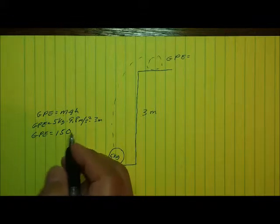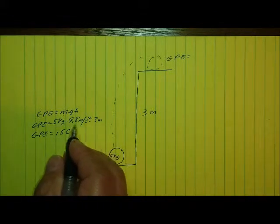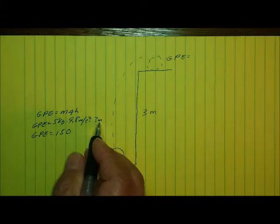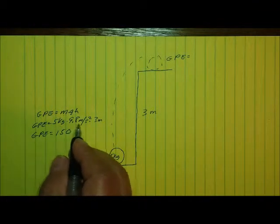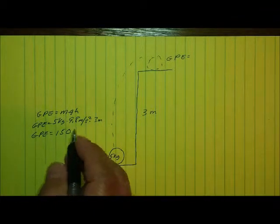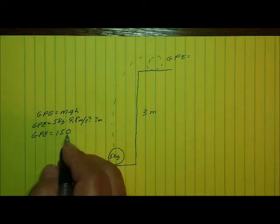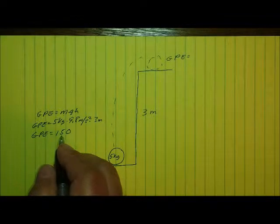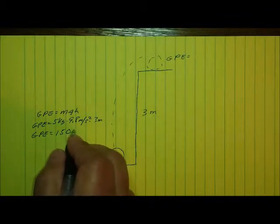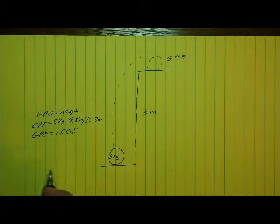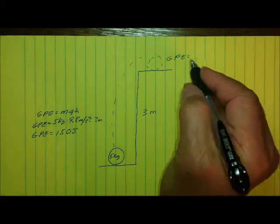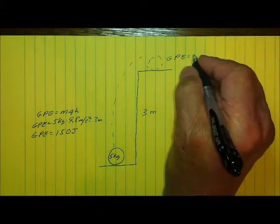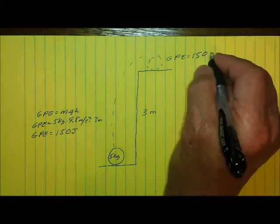And that's going to be kilogram meters per second squared, which is newtons, times meters. So, it's going to be newton meters or kilogram meter per second squared meters. Or, to make things simpler, remember that a newton meter is the same as a joule. So, I'm just going to write this as 150 joules. So, the gravitational potential energy that this object has when I placed it up on top of that shelf is going to be 150 joules.